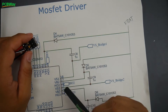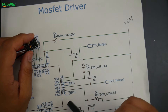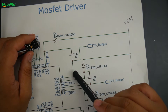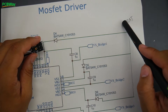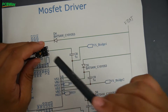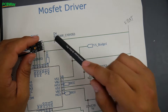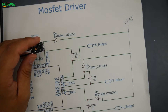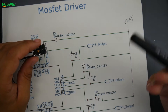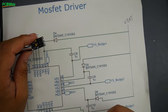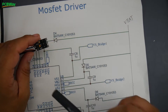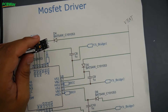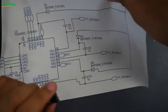The FET driver is actually very simple. The VS1 pin needs a capacitor and a diode — one side of the diode is connected to VBAT. So basically it's: diode, capacitor, diode, capacitor, diode, capacitor — that's really all it has. On the outputs, each output will have one resistor. That's what we're going to take a look at under the microscope now.